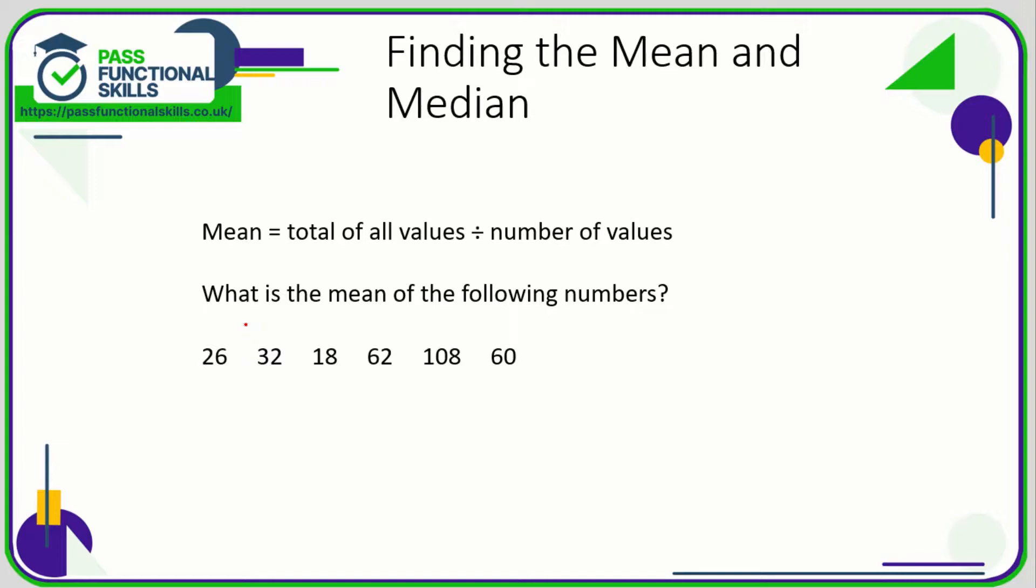Let's take a look at finding the mean and the median. Mean and median are just two different ways of working out an average. To calculate the mean, you need to add up all of the values and divide by the number of values.